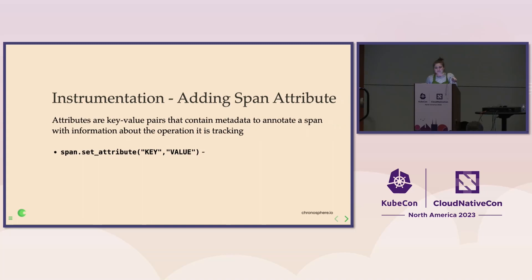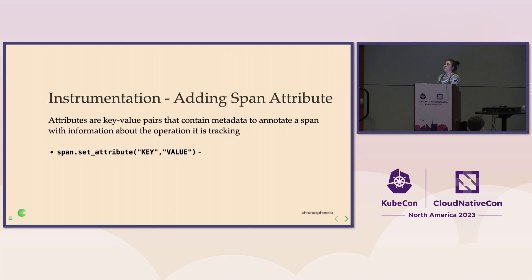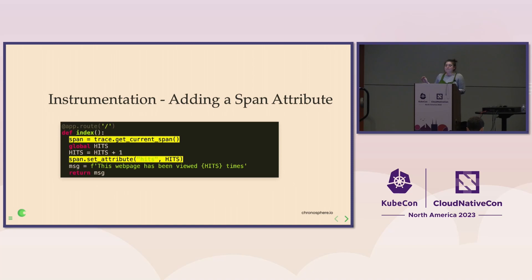This is people's first steps with tracing instrumentation — just needing to add a key-value pair span attribute. They are just metadata to annotate a span with more information that might help you. The API call is span.set_attribute(key, value) — both strings. In our case, because we're manually instrumenting, we'll declare a span, call trace.get_current_span attached to index, and then set the attribute — 'hits' as the string key, and hits as the value that comes from index.